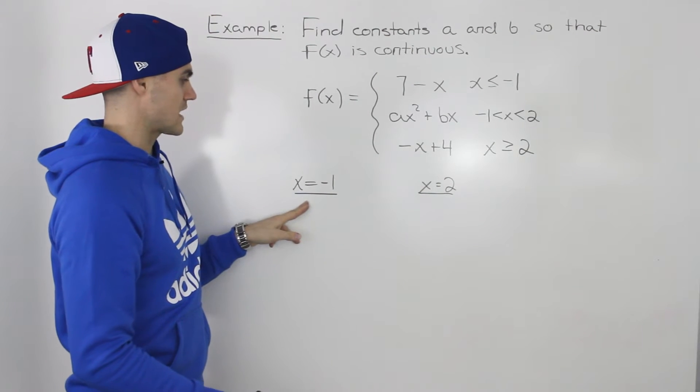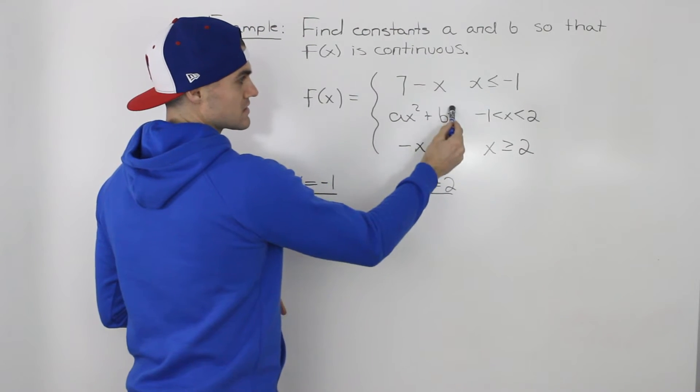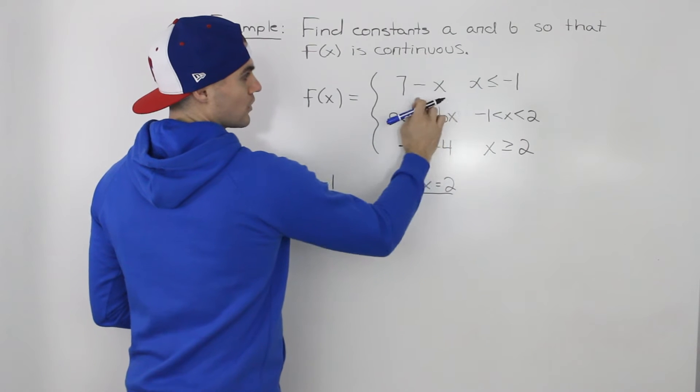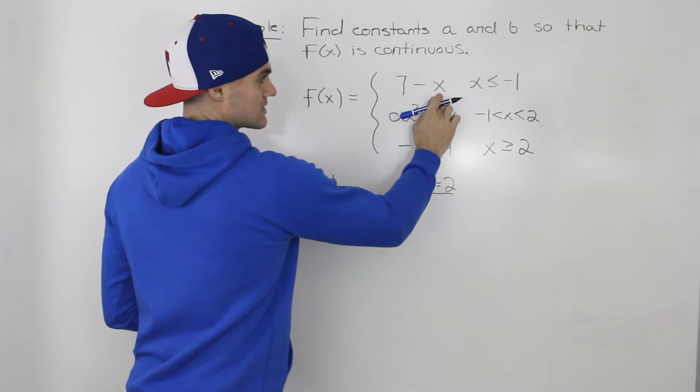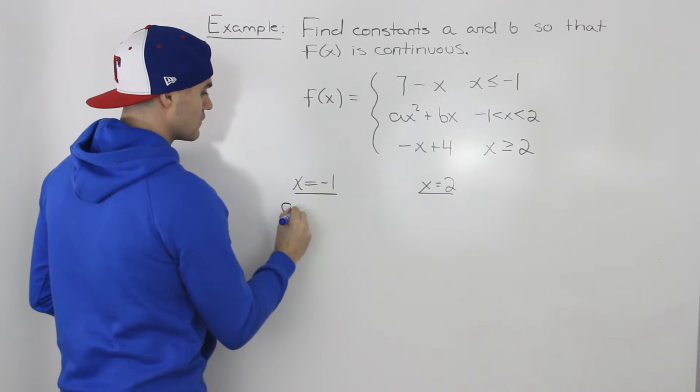Let's start off with this x value of negative 1. That's where these two pieces are going to meet. The y value at x equals negative 1 for this first piece, 7 minus x, if we plug in negative 1 for x, we would get a y value of 8.